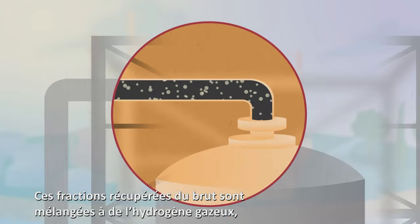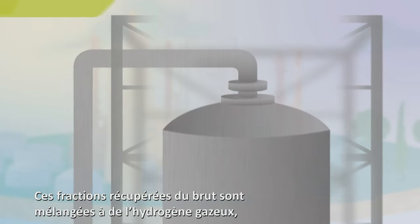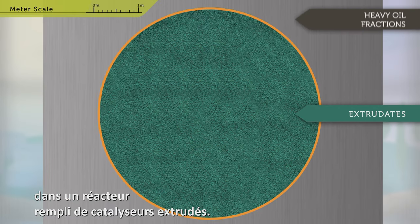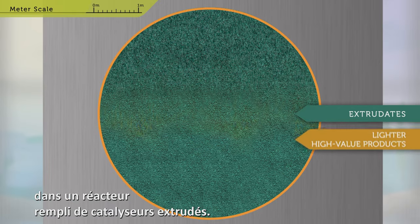To do so, the heavy oil fractions recovered from the crude are mixed with hydrogen gas and subjected to high pressure and temperature in a reactor filled with catalyst extrudates.